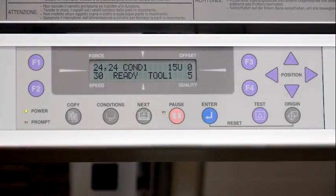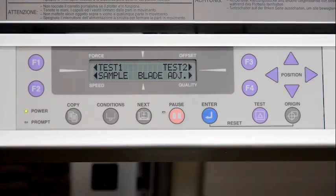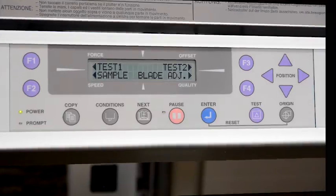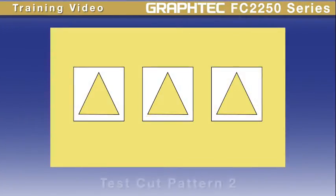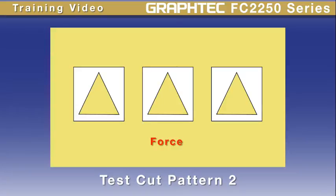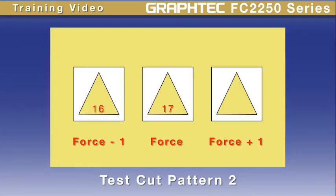Once the condition is configured, it can be tested by pressing the test button on the control panel. The display screen prompts you with four options; we'll focus on just two: test one and test two. Test one cuts a square and a triangle pattern. Test two cuts the same square and triangle pattern three times. The middle pattern is cut with the current force, the pattern on the left is cut with the current force minus one, and the pattern on the right is cut with the force plus one.